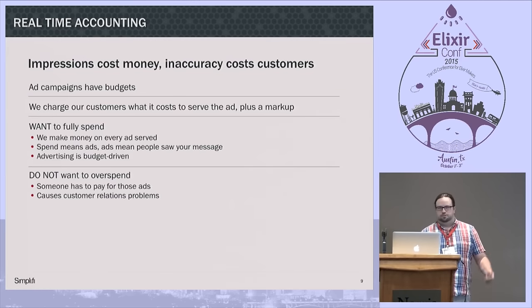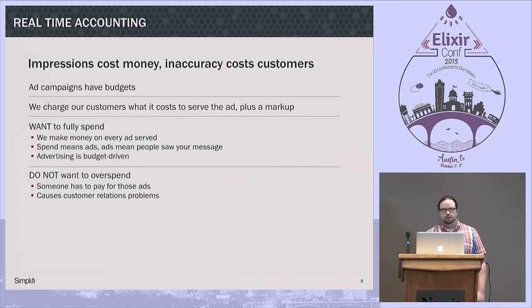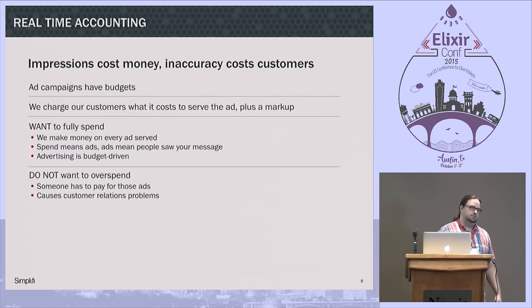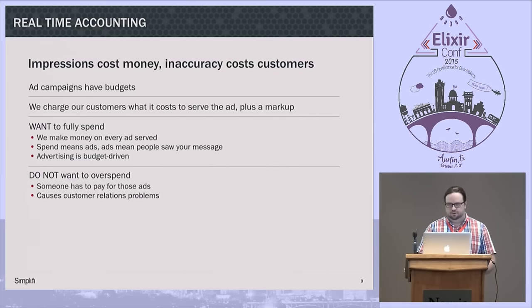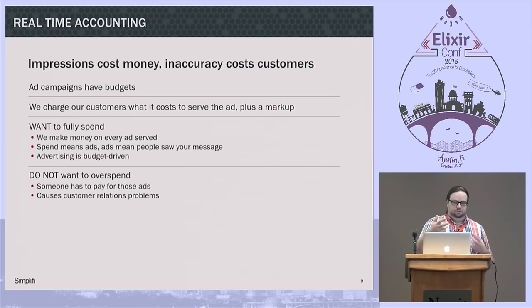A hundred dollars a day boils down to like ten thousand impressions — an impression is just showing somebody an ad. We have to count that so we don't accidentally serve too many ads. That's bad not only because somebody's got to pay for that, but because our customers are often people running ad campaigns for, say, some local tire shop. They don't want to worry about their advertising campaigns, so they hire somebody else to manage it. Every step of the way where you're communicating that to somebody, there's a chance for somebody to get upset and take their business somewhere else.